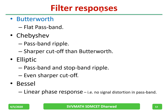Filter responses can be classified as: Butterworth — where the passband is flat, sometimes called a maximally flat filter; Chebyshev — where passband ripples are found; Elliptic — where ripples are found in both passband and stopband, giving a sharper cutoff; and Bessel — which has a linear phase response with no signal distortion in the passband. In our discussion, we will concentrate only on Butterworth filters.